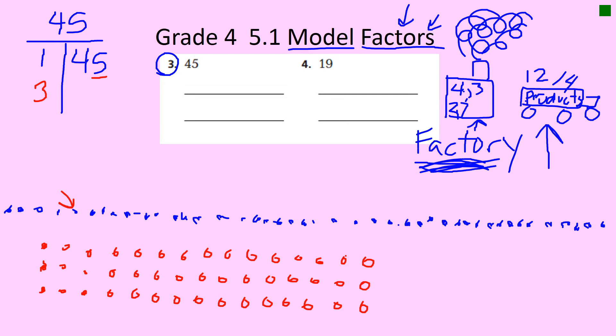But every factor has to have a buddy factor, because a factor has to have a buddy to make a product. So how many are in each row? Let's see. [Counting across one row: 1 through 15] So three rows of 15. Three is a factor of 45 and 15 is a factor of 45.